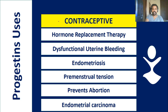The primary use is as a contraceptive. Second, it can be used as hormone replacement therapy, for treating dysfunctional uterine bleeding, for treating endometriosis, for treating premenstrual syndrome, and to prevent abortions, and in the treatment of endometrial carcinoma.